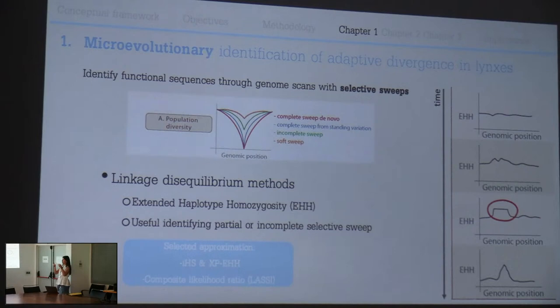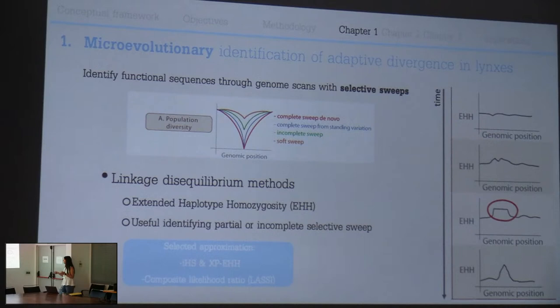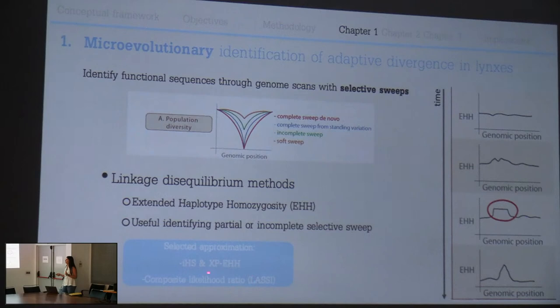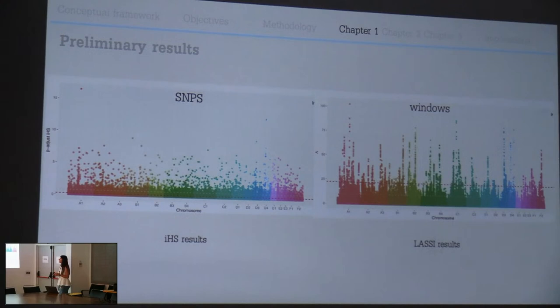For this approximation I use the integrated haplotype score (iHS) and cross-population extended haplotype homozygosity, and also a composite likelihood ratio based method called LASI. Now I'm going to show you preliminary results from this chapter.